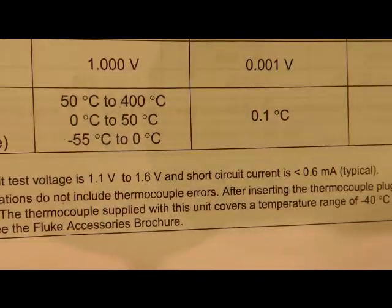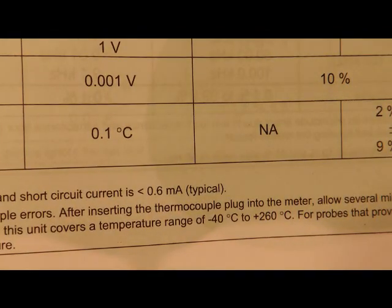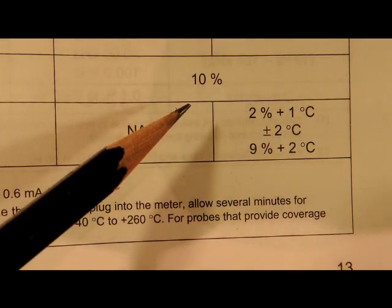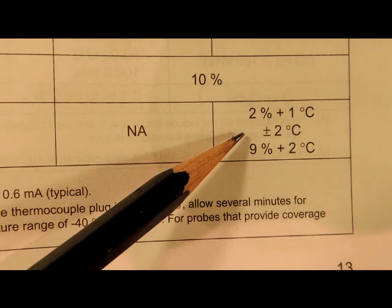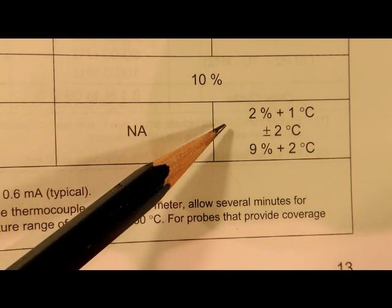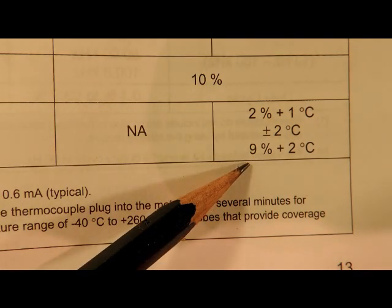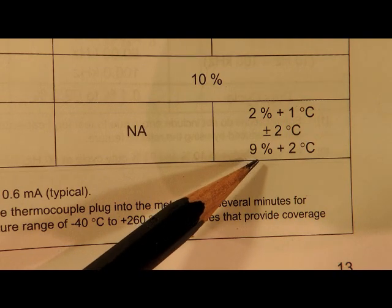The reason they have three ratings is that it has 0.1 degree resolution, but the accuracy varies. It's 2% from 50 degrees Celsius to 400 degrees, plus or minus 2 degrees Celsius from 0 to 50 degrees, which is where most people will be operating, and at very cold temperatures, minus 55 to 0, it's 9% accuracy plus or minus 2 degrees.